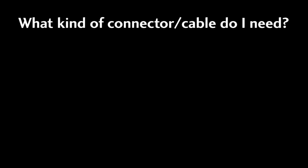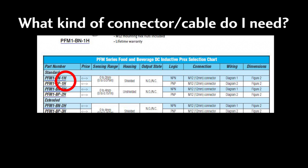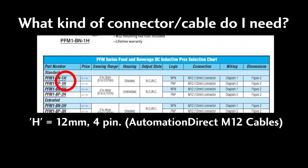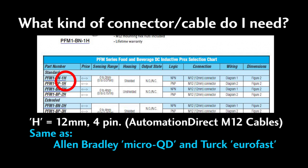The best way to tell what kind of connector a sensor uses is to look at the last character of the part number. An H is a 12 mm 4 pin connector that all of the AutomationDirect M12 cables are compatible with. This is the same connector as Allen Bradley's Micro QD and Turck's Eurofast.